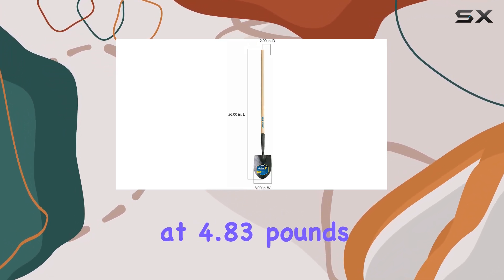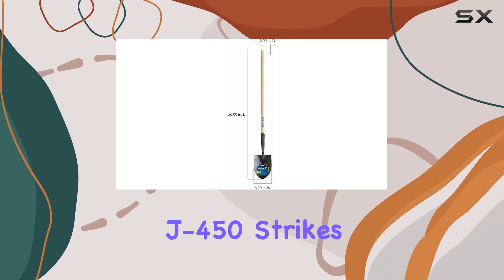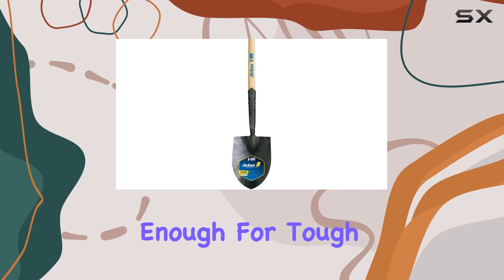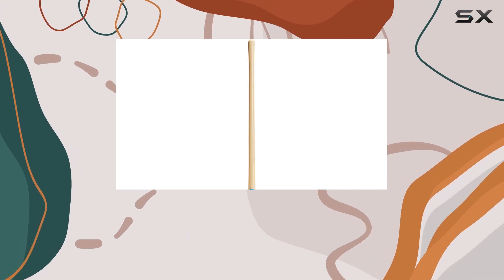Weighing in at 4.83 pounds, the Jackson J 450 strikes a balance between heft and manageability, making it robust enough for tough jobs while still being easy to handle.